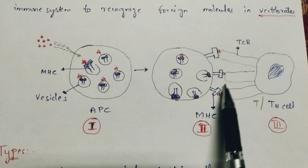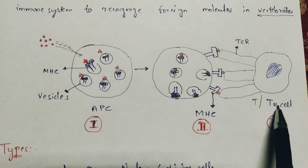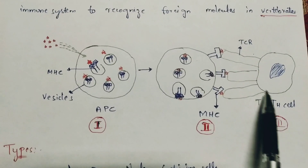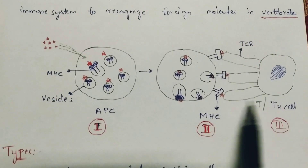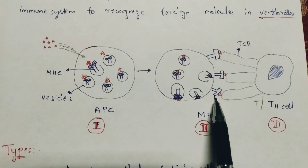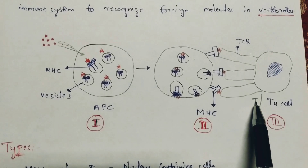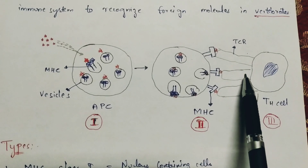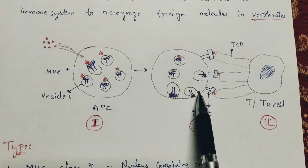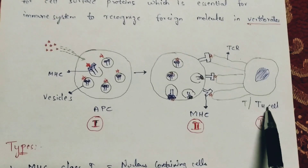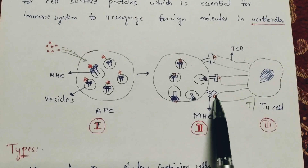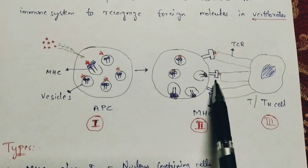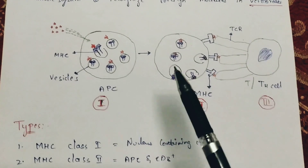In the third step, the MHC molecule is recognized by T cells or T helper cells with the help of T cell receptors. T cells, also known as CD8+ cells, release CD8 cell receptors that bind with MHC class 1 molecules. If MHC class 2 molecules are exposed, they bind with T helper cells.